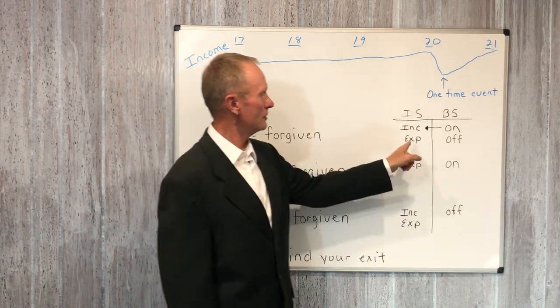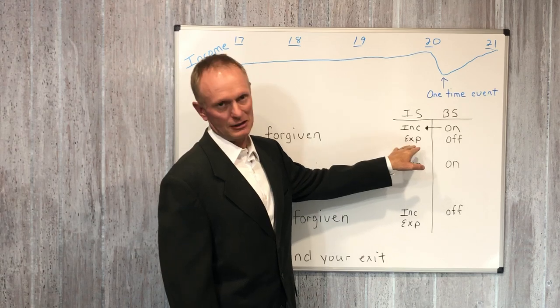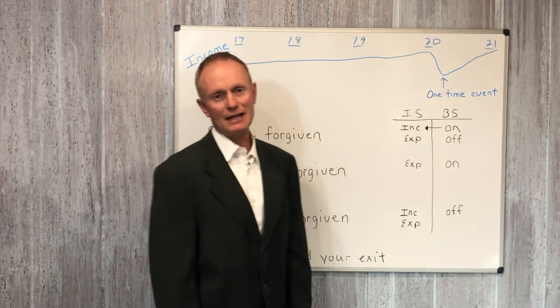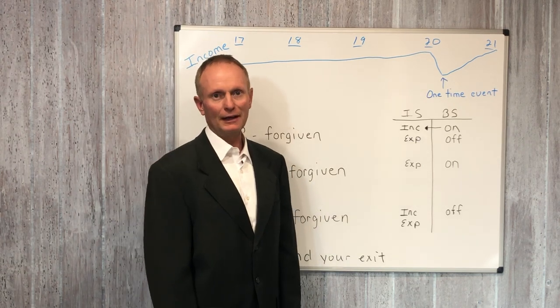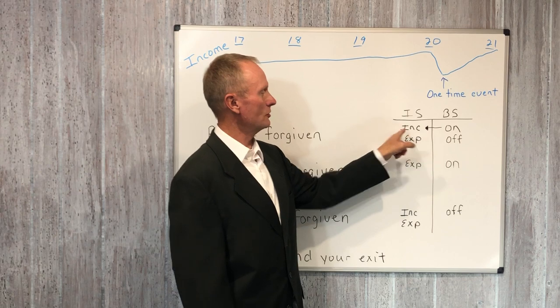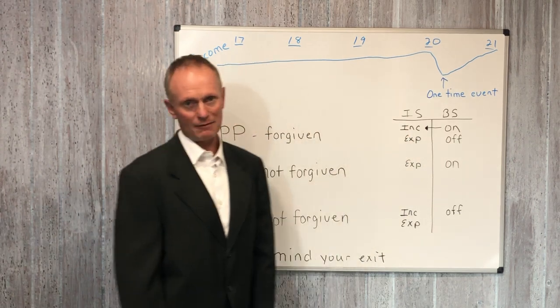Initially, when you get your PPP loan, it should be accounted for as an expense as you spend the money, and it's going to be on your balance sheet as a debt when you first receive the money. After it's forgiven, it's removed from the balance sheet, and then it shows as income on your income statement.